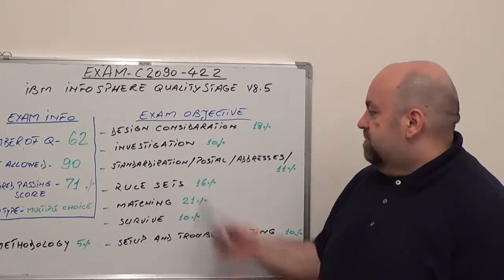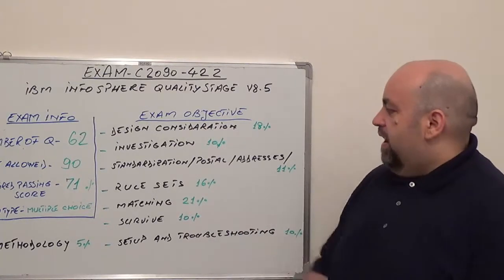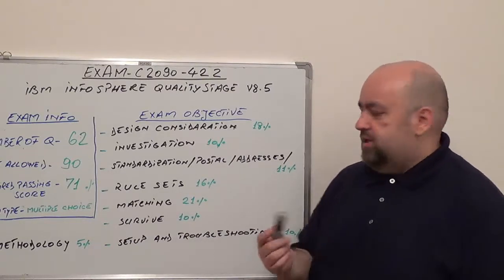Next one is standardization, postal and addresses, 11% from total of questions, followed by rule sets, 16% from total of questions.